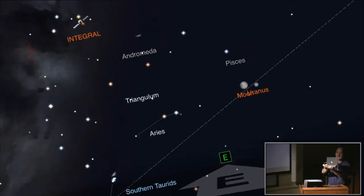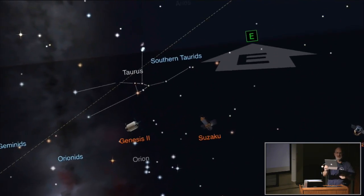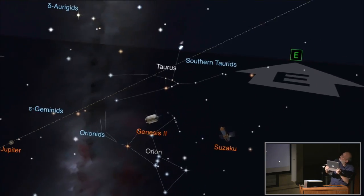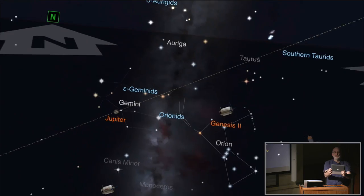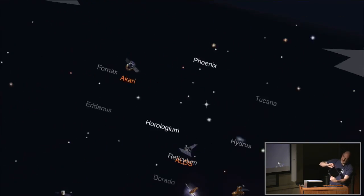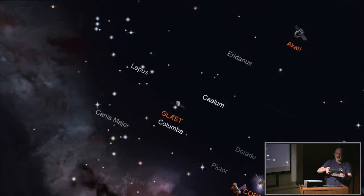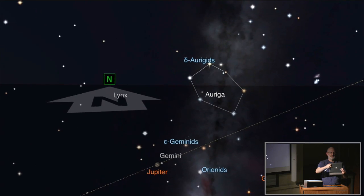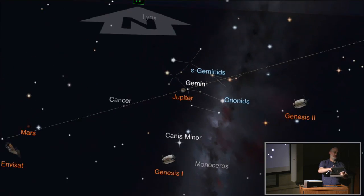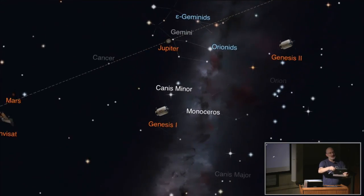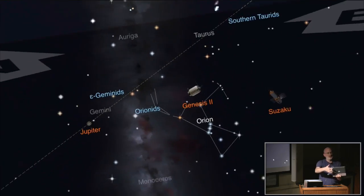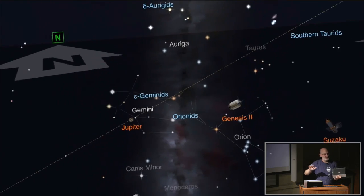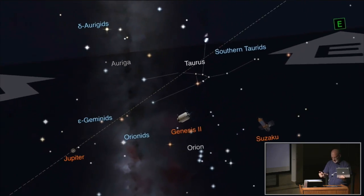StarWalk also allows you to get a little help in orienting yourself. There's a little icon in the corner with a camera shutter. When I turn that on, it'll actually display through the camera what's in the background. It's called augmented reality, so it kind of turns your device into a heads-up display.